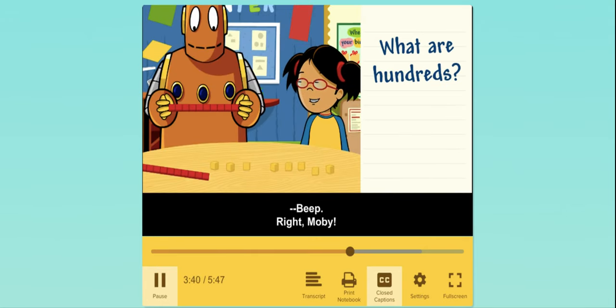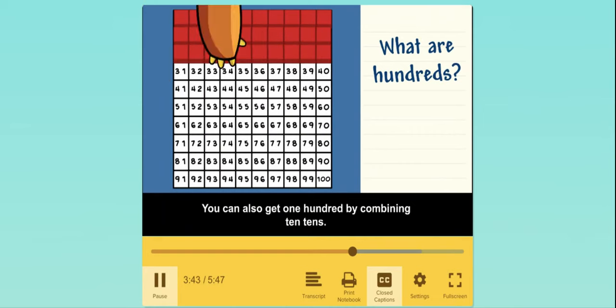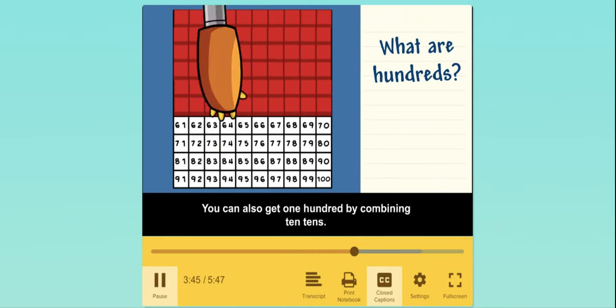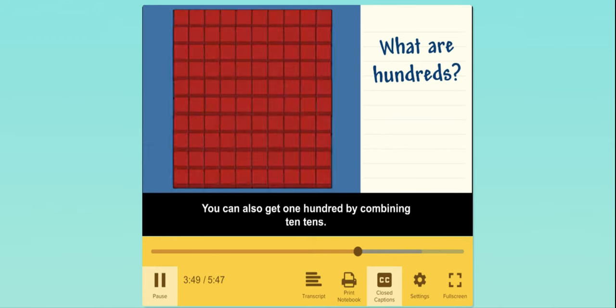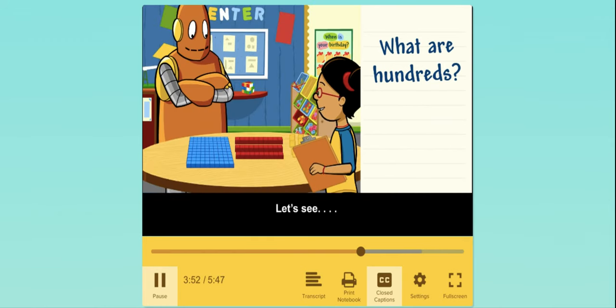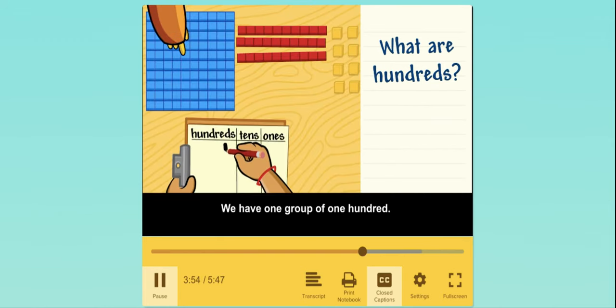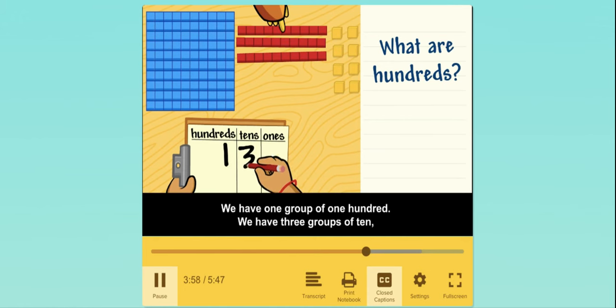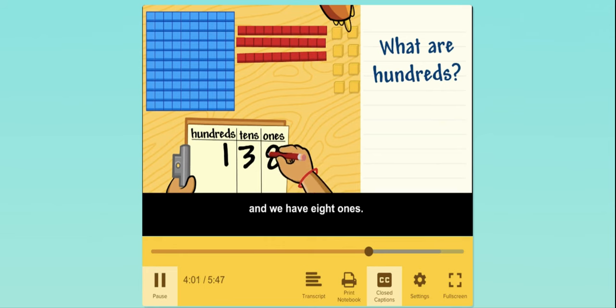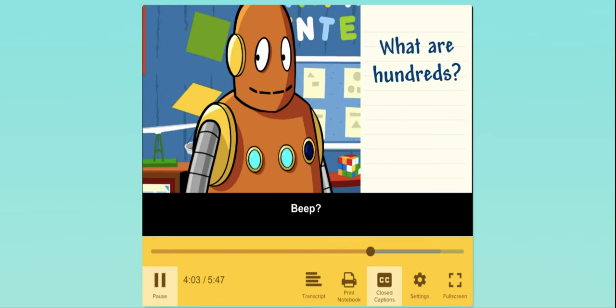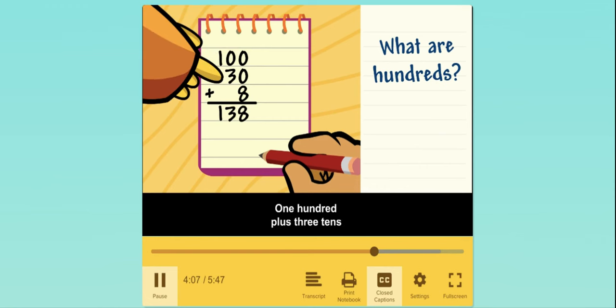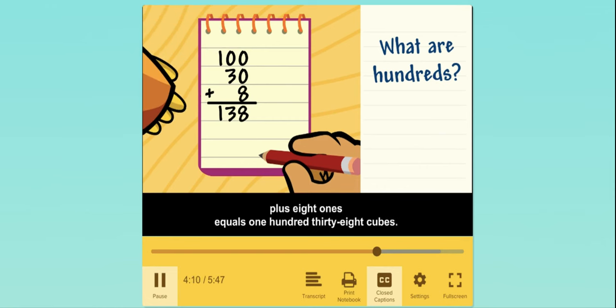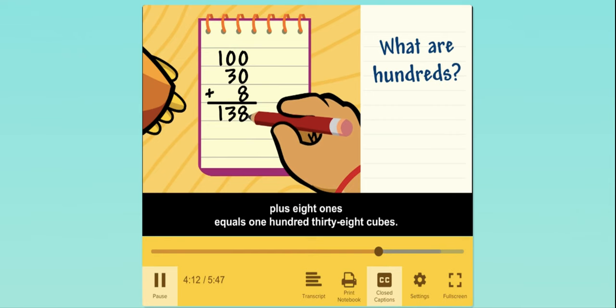Right, Moby. You can also get 100 by combining 10 tens. Let's see. We have 1 group of 100. We have 3 groups of 10. And we have 8 ones. 1 hundred plus 3 tens plus 8 ones equals 138 cubes.